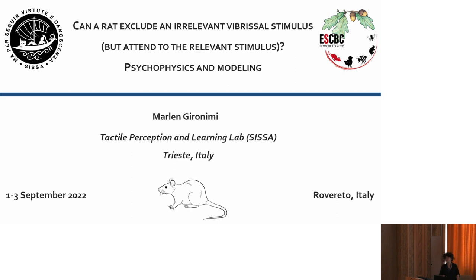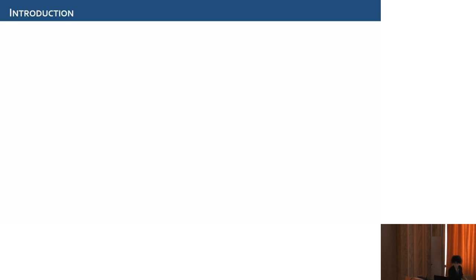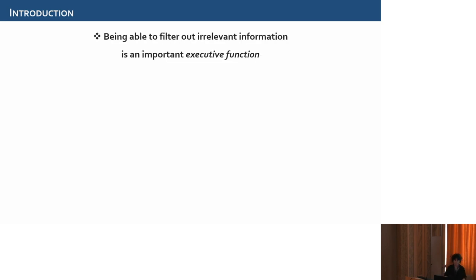Good afternoon. I'm Marlene Geronimi. Today I will present my master thesis project: can we exclude an irrelevant vibrissal stimulus but attend to the relevant one — psychophysics and modeling. Before going into the details of the experiment, I'd like to give a brief introduction. We know that the ability to focus on relevant information and exclude irrelevant information is an important ability among the executive functions — those that allow flexible behavioral adaptation and goal-oriented behavior.